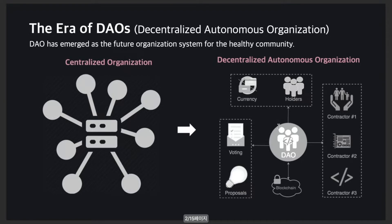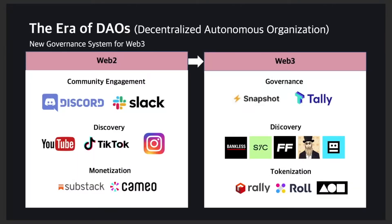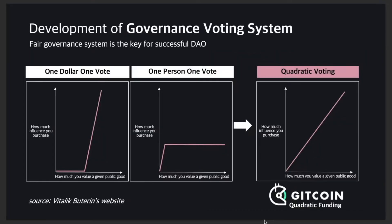Recently, DAO, which stands for Decentralized Autonomous Organization, emerged as the innovative organization system for healthy community governance. This is the new governance system for the coming Web3 ecosystem. DAO-based services are trying new innovative methods to improve weaknesses that current centralized governance systems have. The key for building a successful DAO is making fair governance systems so lots of community members can make their voices heard and lead the group in a better direction.